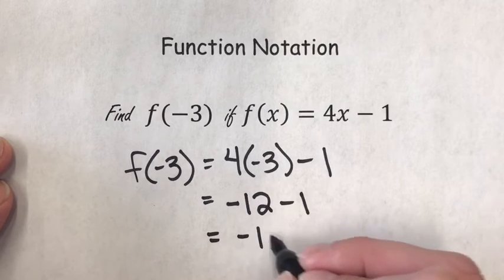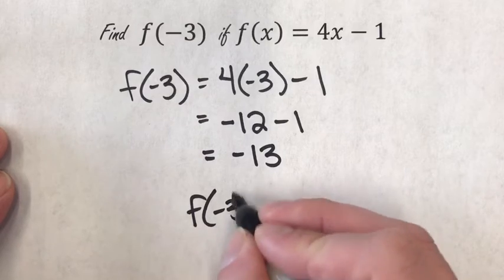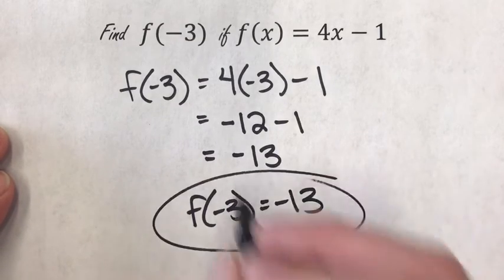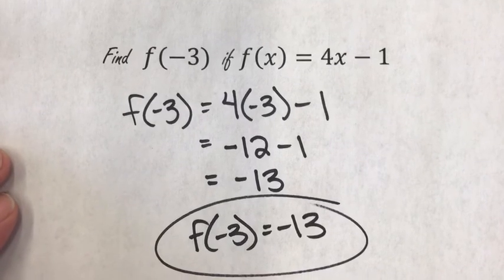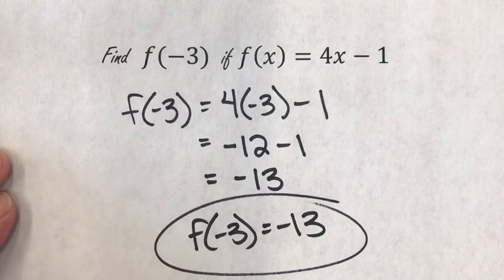1 is negative 13, so I can say f of negative 3 is negative 13. That's it. Remember, f(x) is the same as y, and so treat it as such.